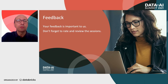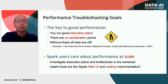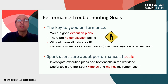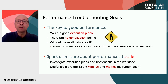As Spark users, we care about performance at scale. The key to good performance is to run good execution plans and make sure to remove serialization points and bottlenecks in general. To do that, we need instrumentation, data and tools that allow us to investigate and find bottlenecks in the workload.